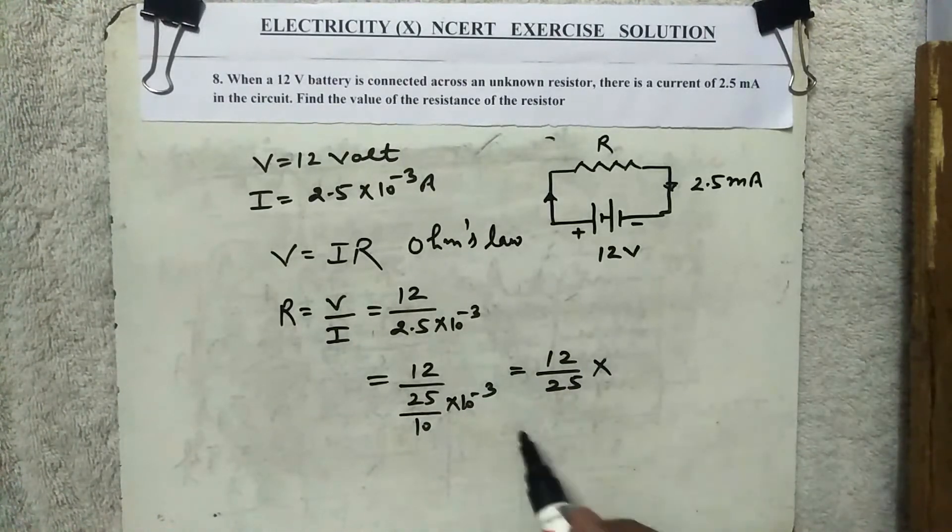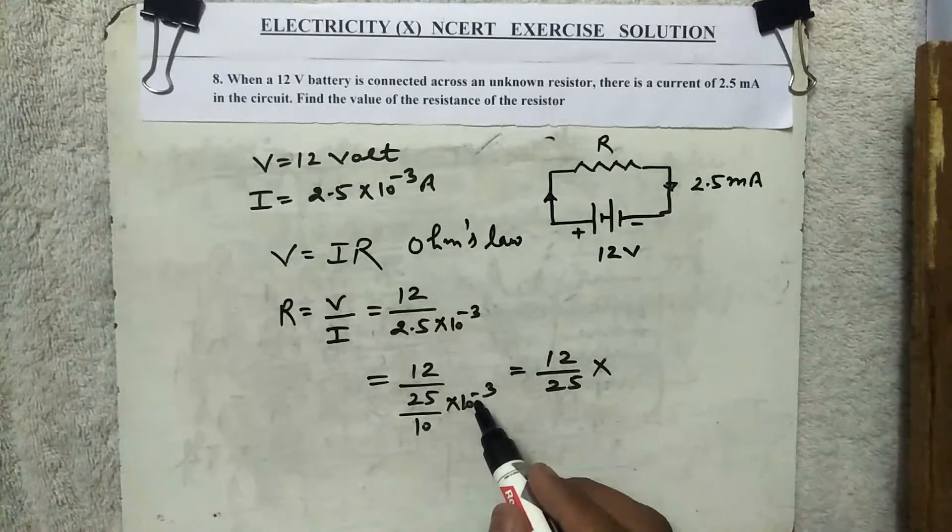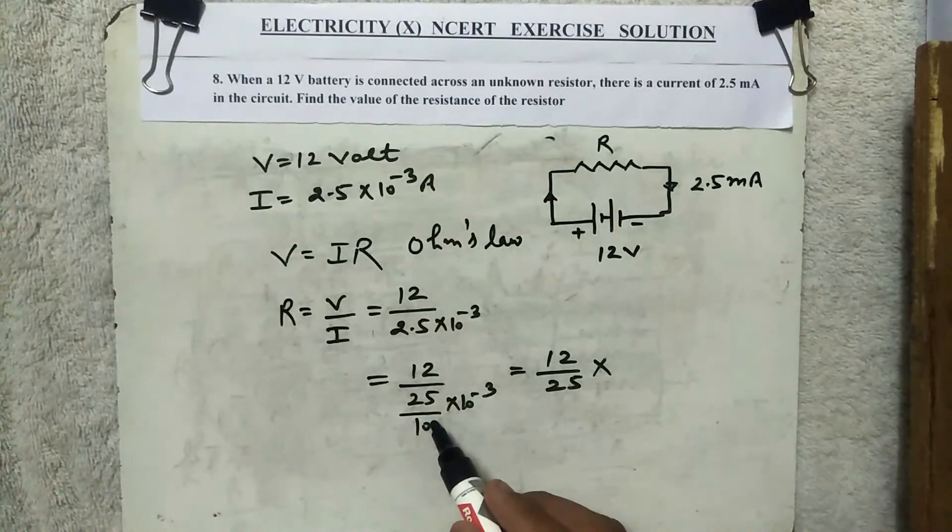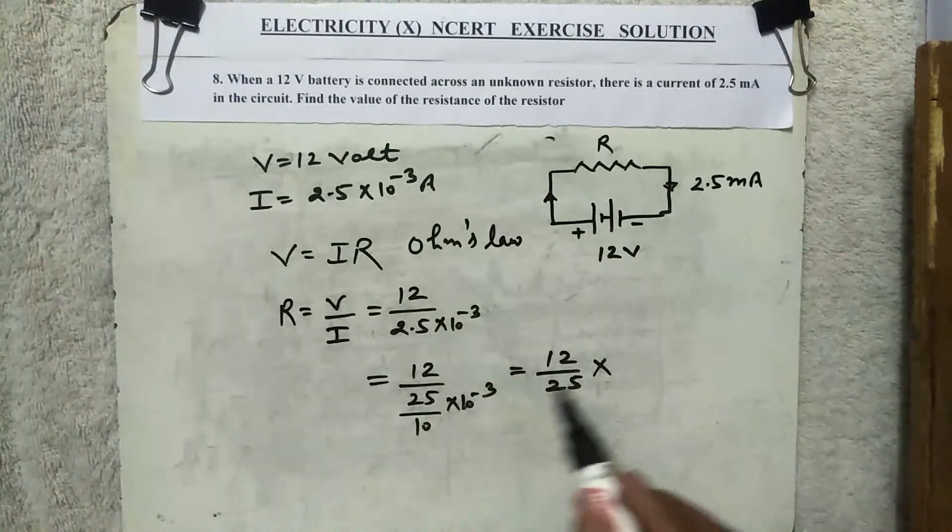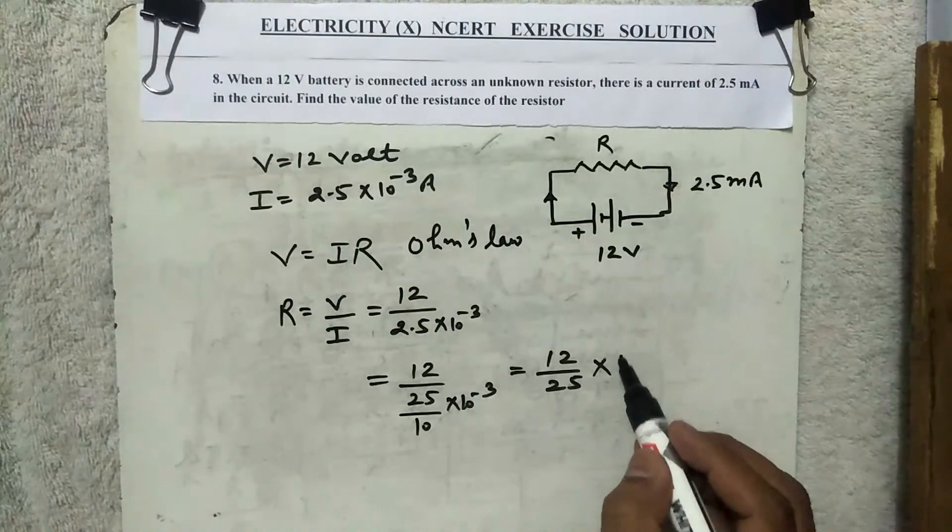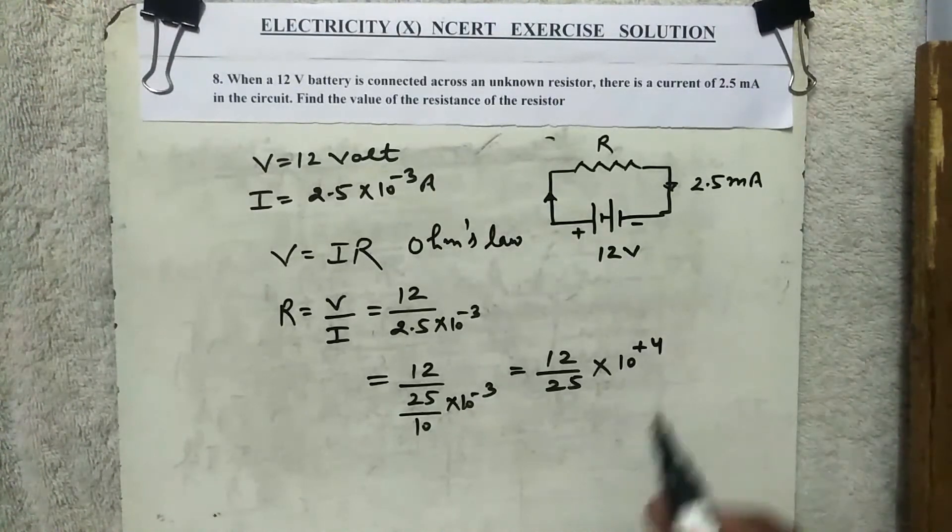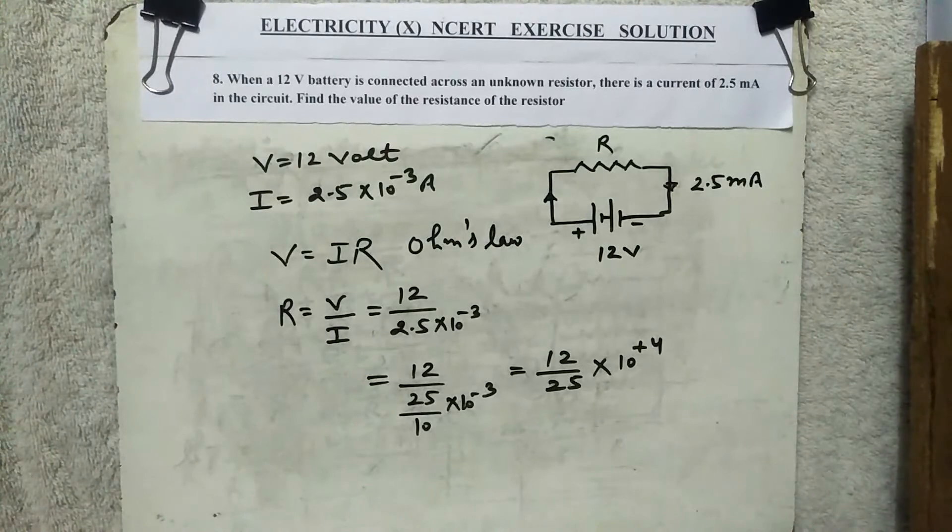Now see what will happen here? Multiply. This 10 will go up and become minus 4, so here it will become plus 4. Clear? Now after doing this, if you see from here...